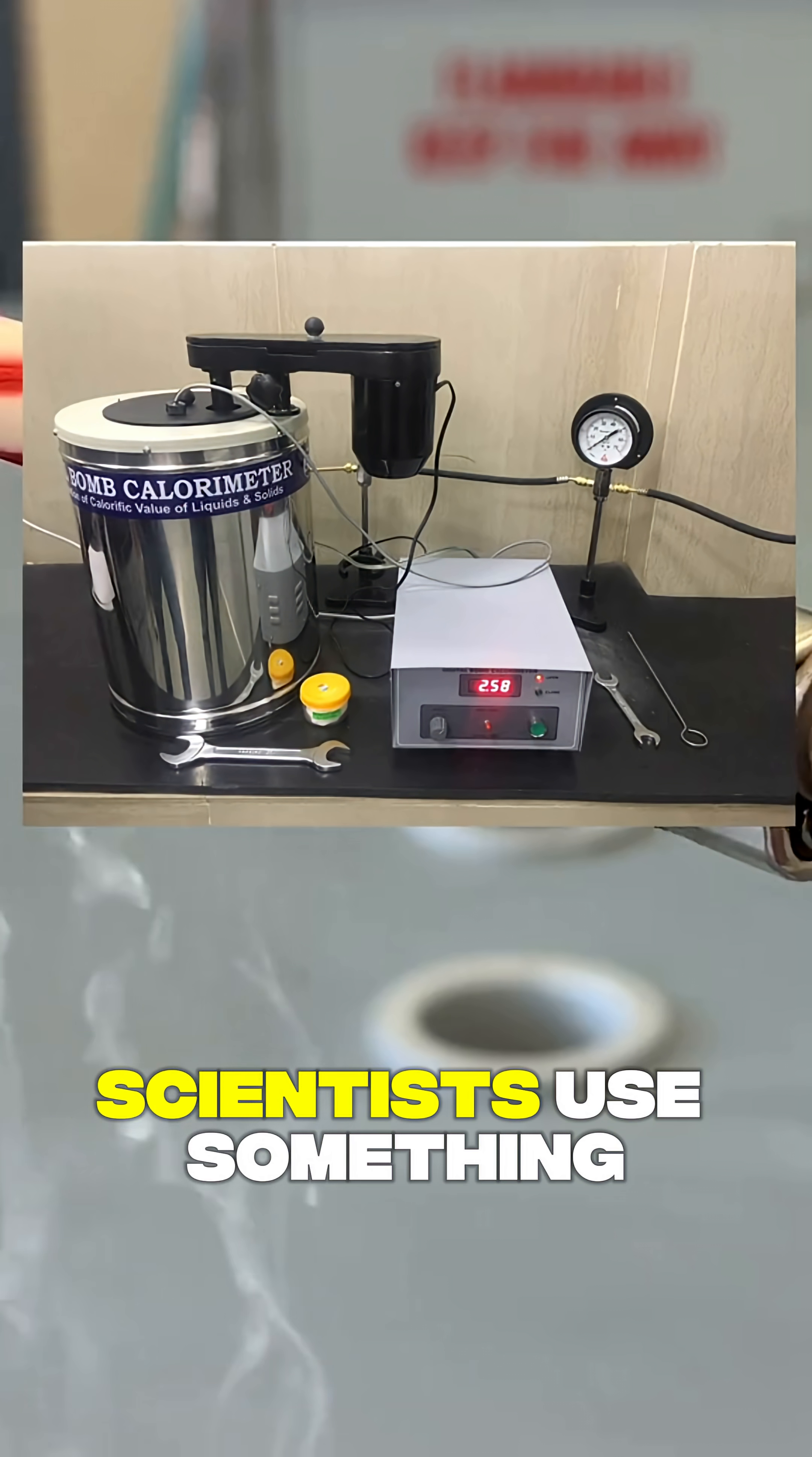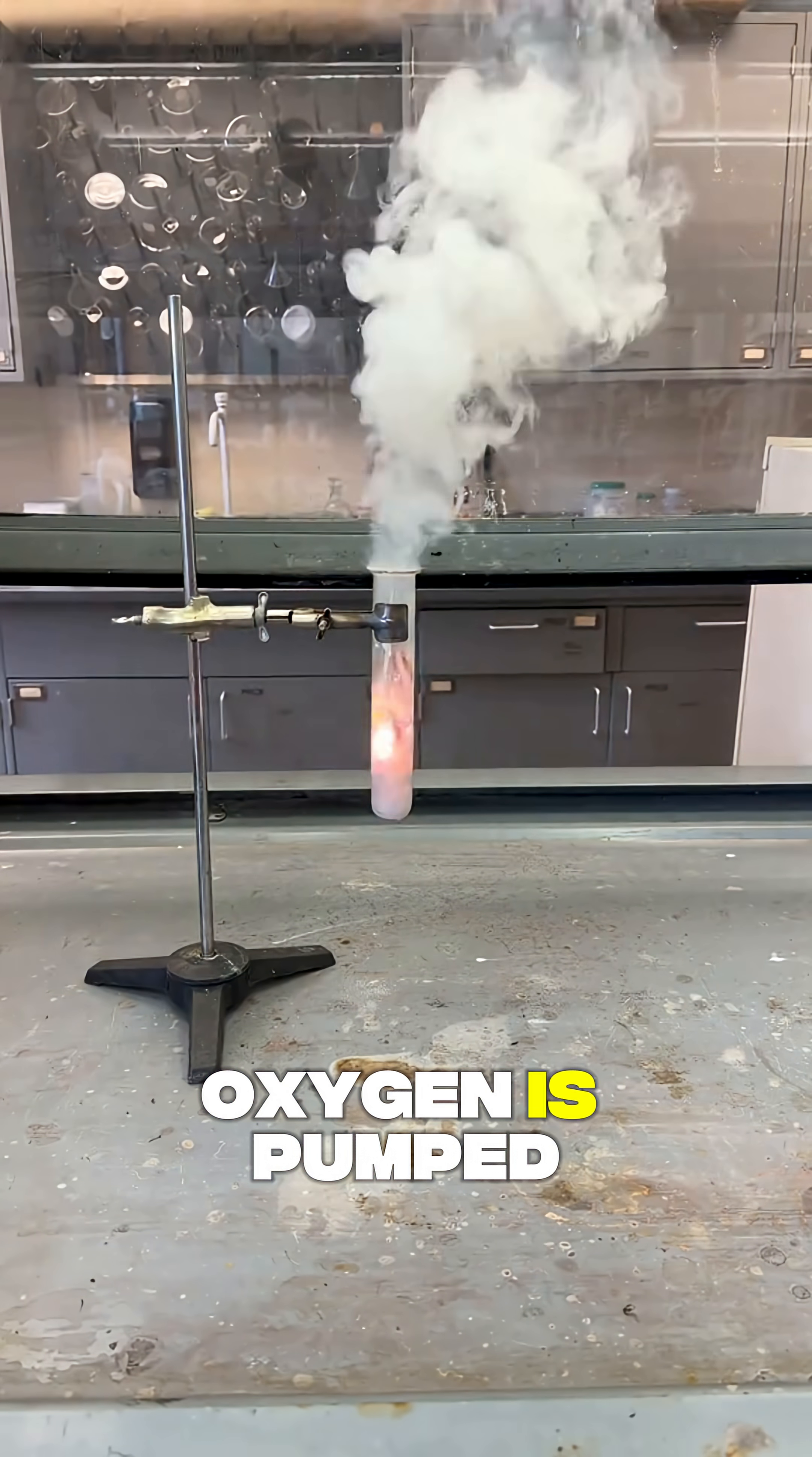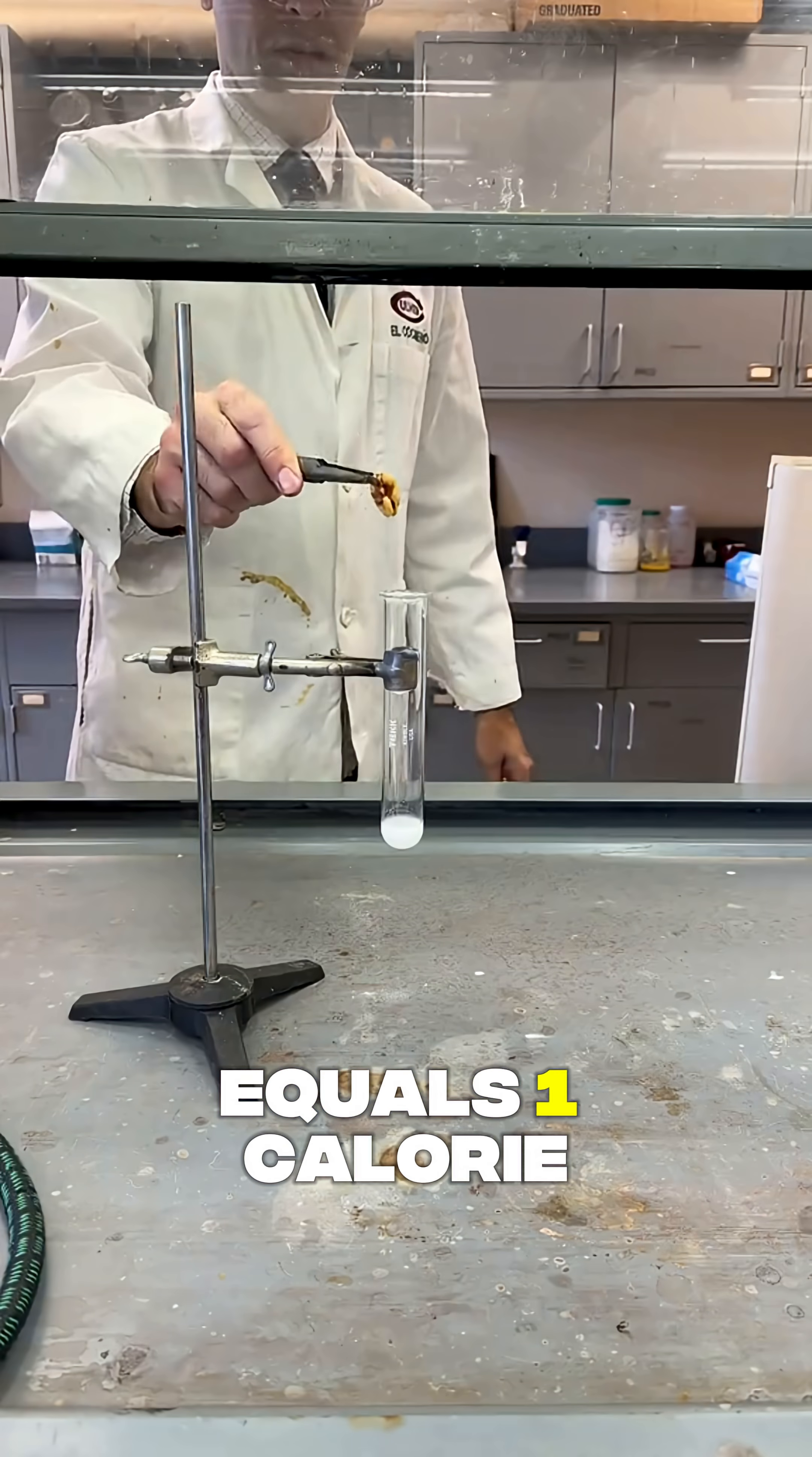To measure energy content, scientists use something called a bomb calorimeter. Despite the dramatic name, it's basically a metal cylinder sitting in a tank of water. A sample of food is placed inside, oxygen is pumped in, and the food is burned. The heat released warms the water, and every degree each gram of water increases in temperature equals one calorie.